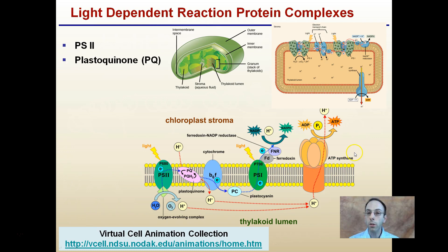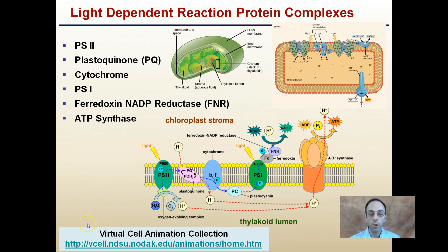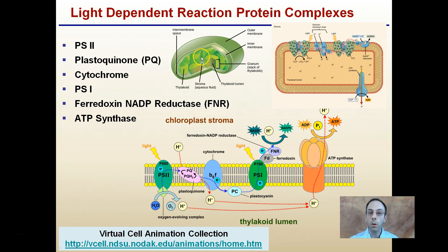Our light-dependent reaction involves several protein complexes. There's also a link to some animations in the description. We're looking at Photosystem II, Plastoquinone, Cytochrome, Photosystem I, Ferredoxin, and ATP synthase — these are the protein complexes we're going to be discussing. Keep in mind that we are dealing with the chloroplast here. The stroma is the aqueous liquid, and the thylakoid lumen is the inner portion of the disc.